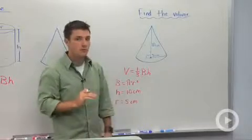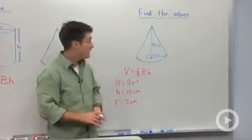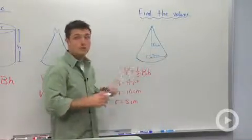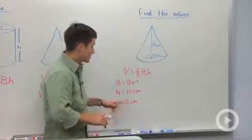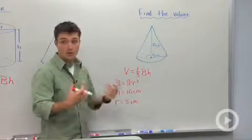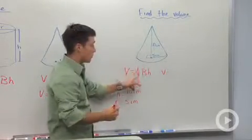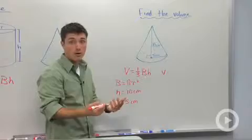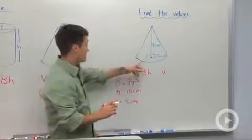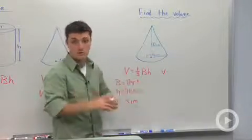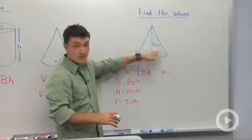Now one thing to be careful of when you're taking a test or a quiz is they might give you a diameter, in which case you have to divide by two to find your radius. So now we can just substitute into our volume formula. We're going to say that volume is equal to one-third, because it's a third of the volume of a cylinder with the same radius and the same height.